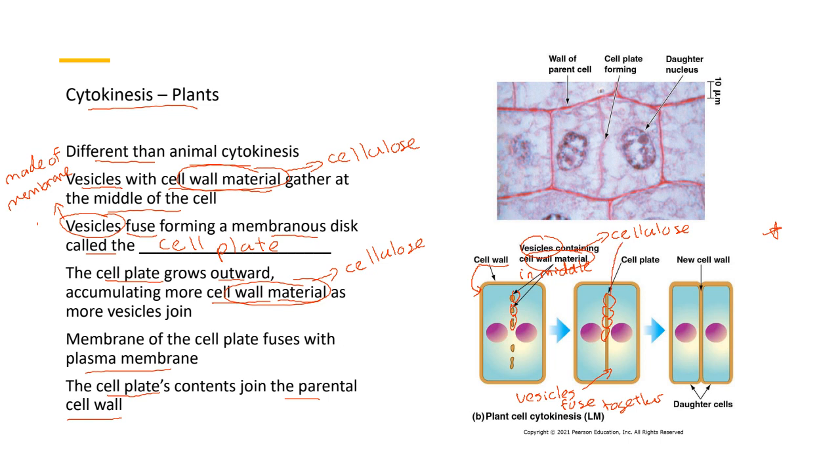And eventually what happens is you create this cell plate, which is a bunch of vesicles fusing together, making a membrane. Eventually you end up with a new cell wall. And finally two daughter cells. So again, the difference is that in animal cells, you have cleavage. In plant cells, you have a cell plate and eventually a cell wall.